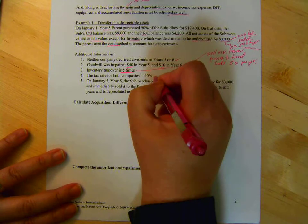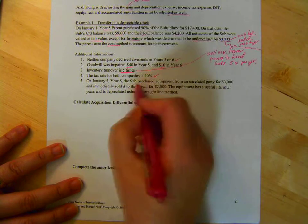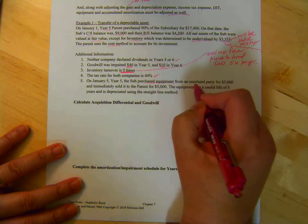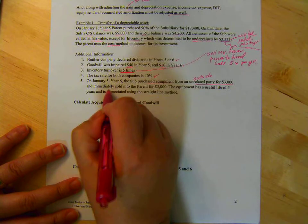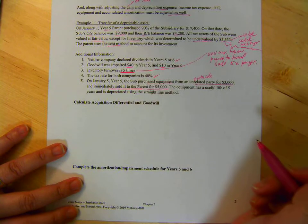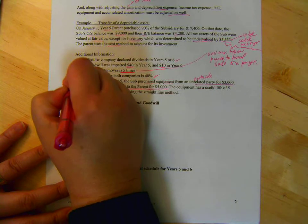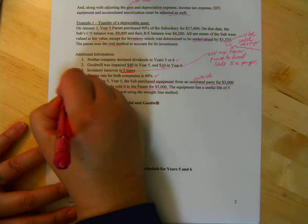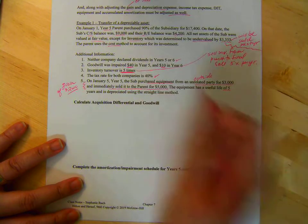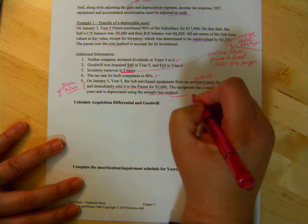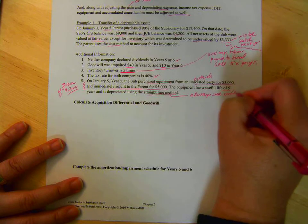Tax rate for both companies is 40%. January 5th, Year 5, the sub purchased equipment from an unrelated party, so from outside, for $3,000. And immediately sold it to the parent for $5,000. So, do we have a gain or a loss? We have a gain of $2,000. Equipment has a useful life of 5 years. Depreciated using the straight line method. Always use unless otherwise stated.